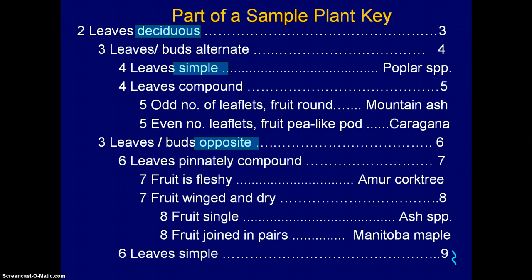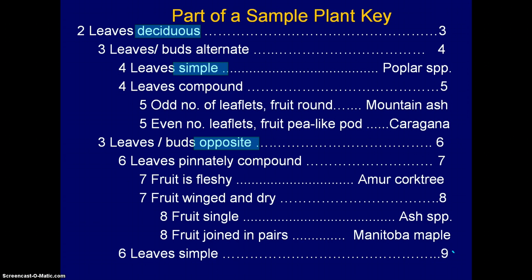Just to refresh, this is a sample of a plant key — just the top portion — it shows the organization of a dichotomous key. The critical things are that you have two choices on the left with different kinds of characteristics. Some characteristics used in plant keys include things like whether the leaves are deciduous, whether they're simple or compound, and whether they're opposite or alternate in arrangement. You'll also notice that there's one unique number on the right-hand side and two on the left side, as we've discussed previously.